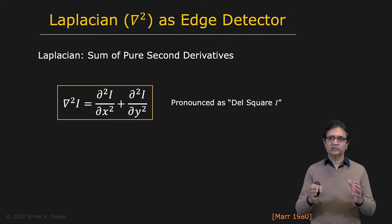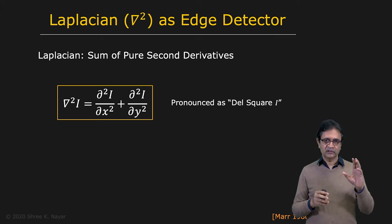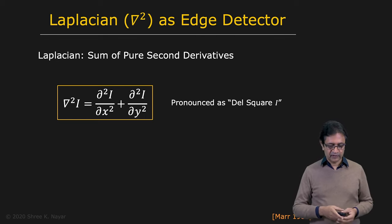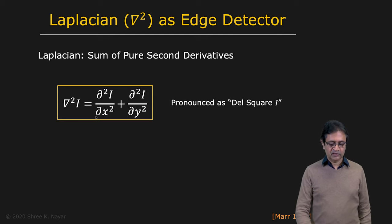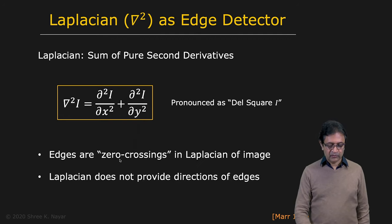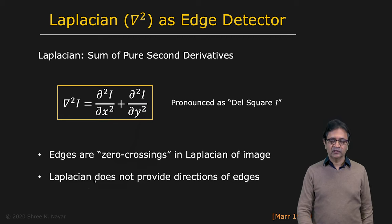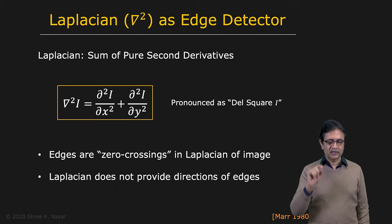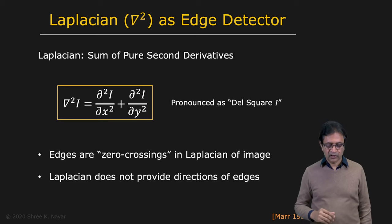That brings us to the Laplacian operator. If you remember, with the gradient operator we called it the del operator. The Laplacian operator is called the del squared operator. The Laplacian is the sum of the second derivative of the image with respect to x and the second derivative with respect to y. When you apply the Laplacian operator to an image, you get zero crossings — and that's where the edges lie. The Laplacian does not provide the direction or orientation of the edge; you simply find the zero crossings to locate edges.